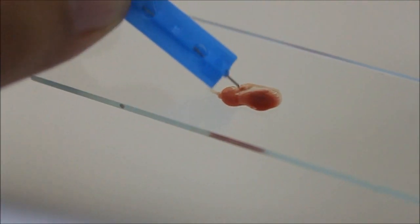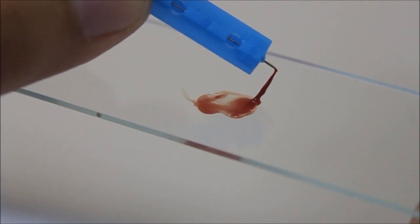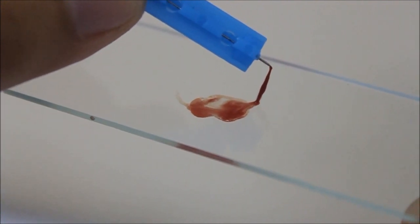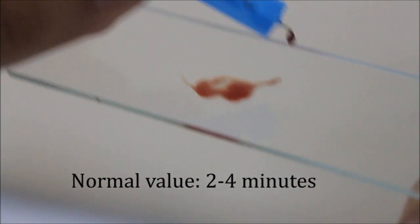Once this fibrin strand is noted, stop the timer. The time that elapses is taken as the clotting time. The normal value for the slide method is 2 to 4 minutes.